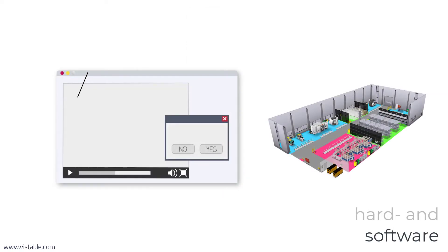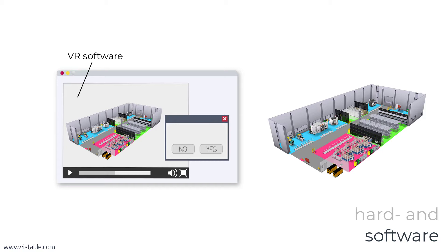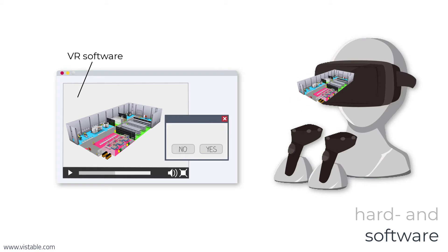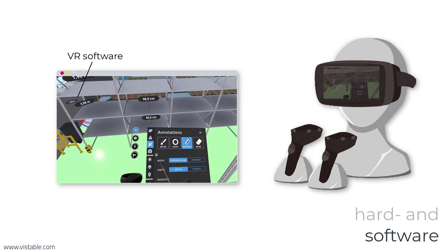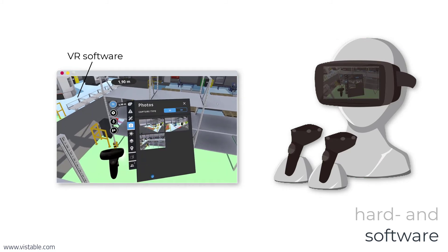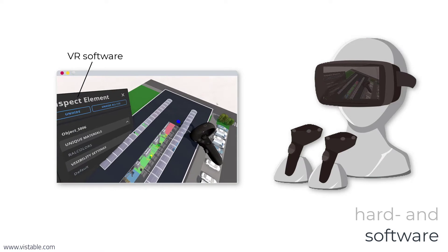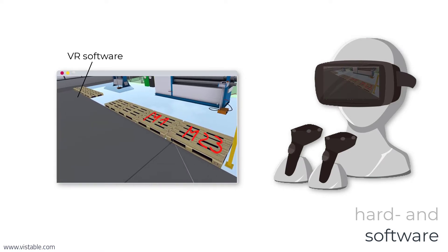In addition to the hardware, you need special software for virtual reality. The software must be able to read in exported models from your planning system or have an interface. Furthermore, the software must be compatible with your chosen VR hardware. In addition, the VR software must offer the range of functions you require. For the use cases mentioned in our example, functions like measuring, photographing for issue tracking and report generation, audio chat, fading in and out of objects, cuts, markups, and so on are interesting.